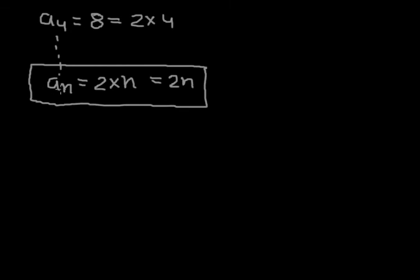Definite order is clear and there is some specific rule. The rule is that each term can be defined as 2n, where n is equal to 1 to infinity. So this is a sequence.